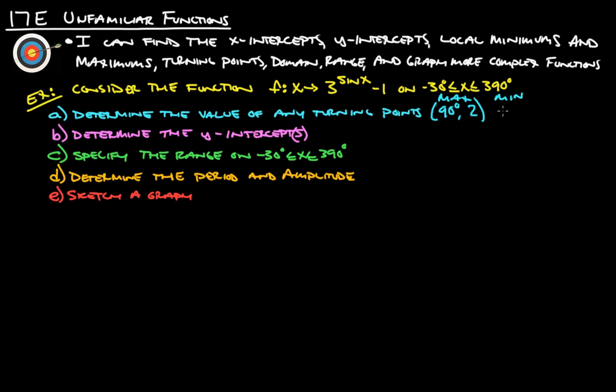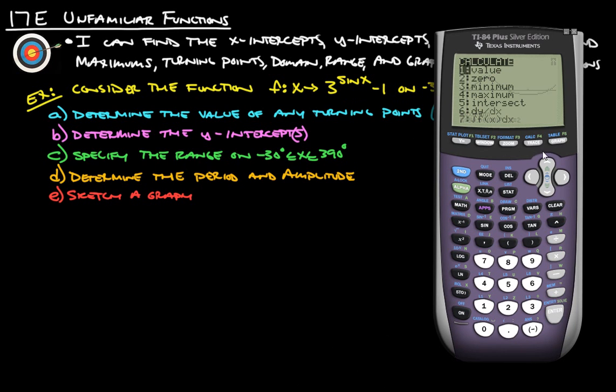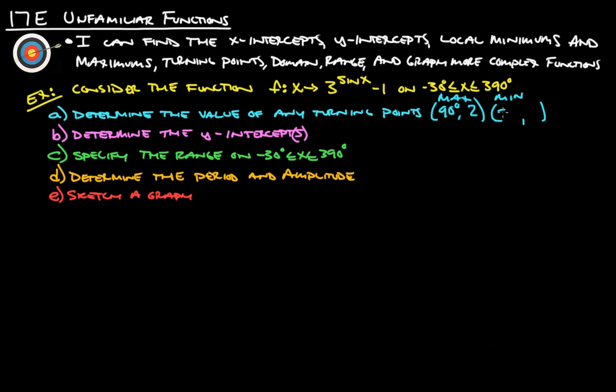And we're also going to have a minimum, and let's figure out where that's going to be. Alright, calculate, minimum, and let's scroll this thing over. Enter, and then we're going to go over to make sure that we get to the right of the minimum. Enter, enter, and we get 269.9999, which is 270, and then negative 0.667, which is negative 2 thirds. So we've got 270 and negative 2 thirds is our minimum.